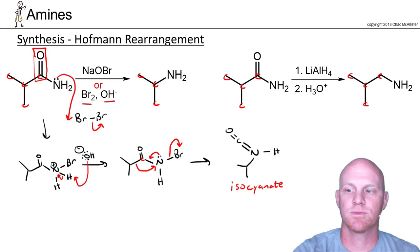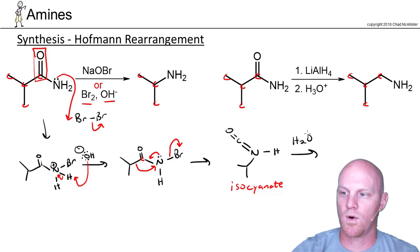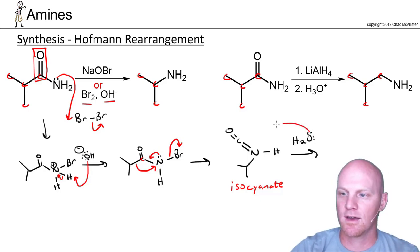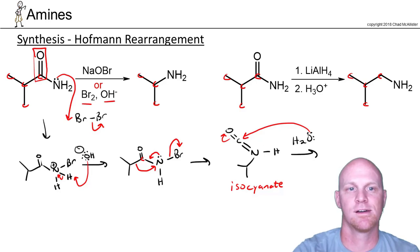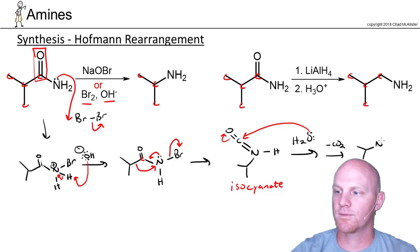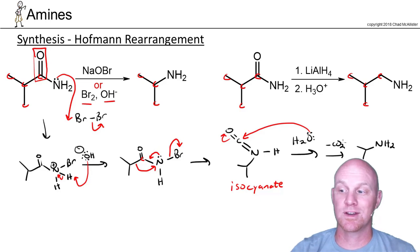This is the big part of the mechanism you need to know. This isocyanate, in the presence of water, will undergo nucleophilic attack, and eventually you're going to lose CO2 — so minus CO2 — and you're simply going to be left with your amine. A variety of proton transfers, loss of CO2, and you get your amine. This is the Hoffman rearrangement mechanism.